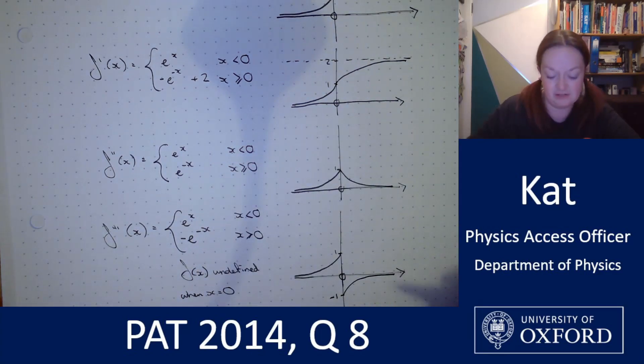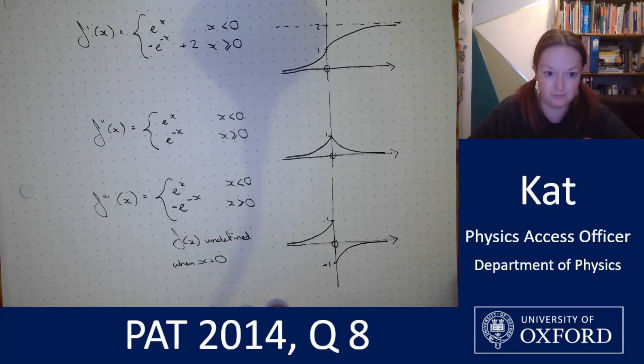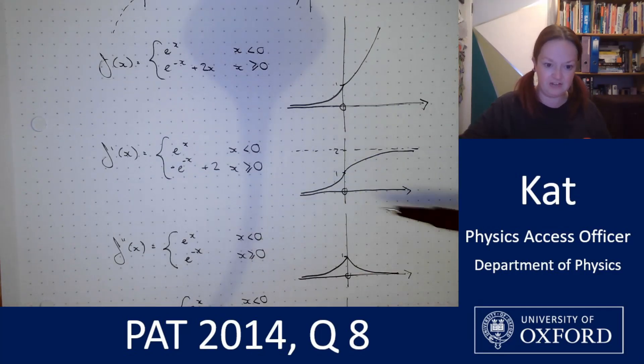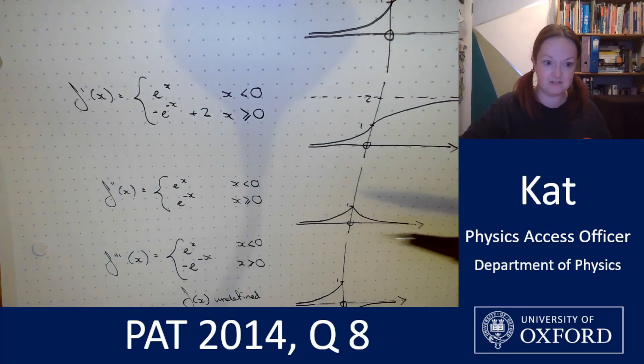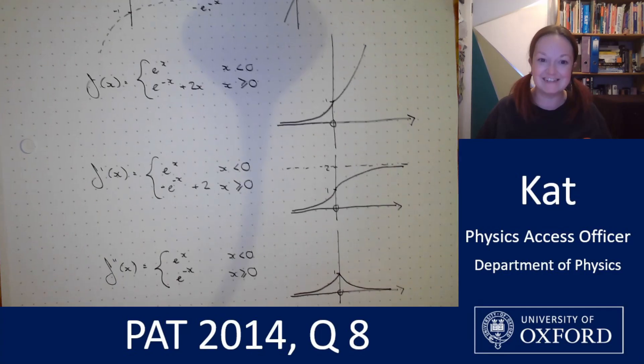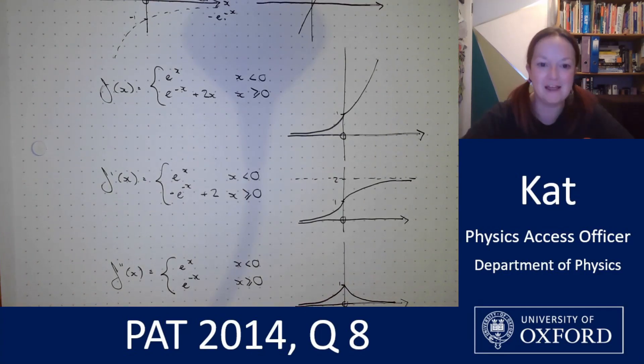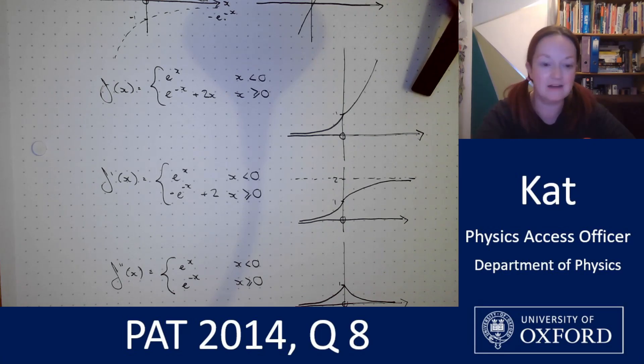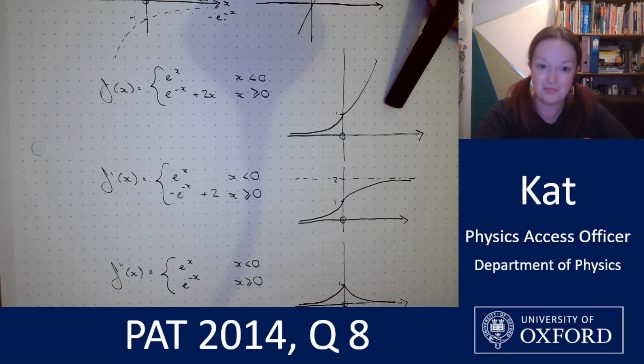We could either indicate that here under the sketch or we could indicate it here on the graph. So there we have it. We have our f(x) and its sketch, f dashed x and its sketch, f double dashed x and f triple dashed x. I hope that helped and I will see you next week for the next problem. I'll be taking you through question nine. Thank you very much.